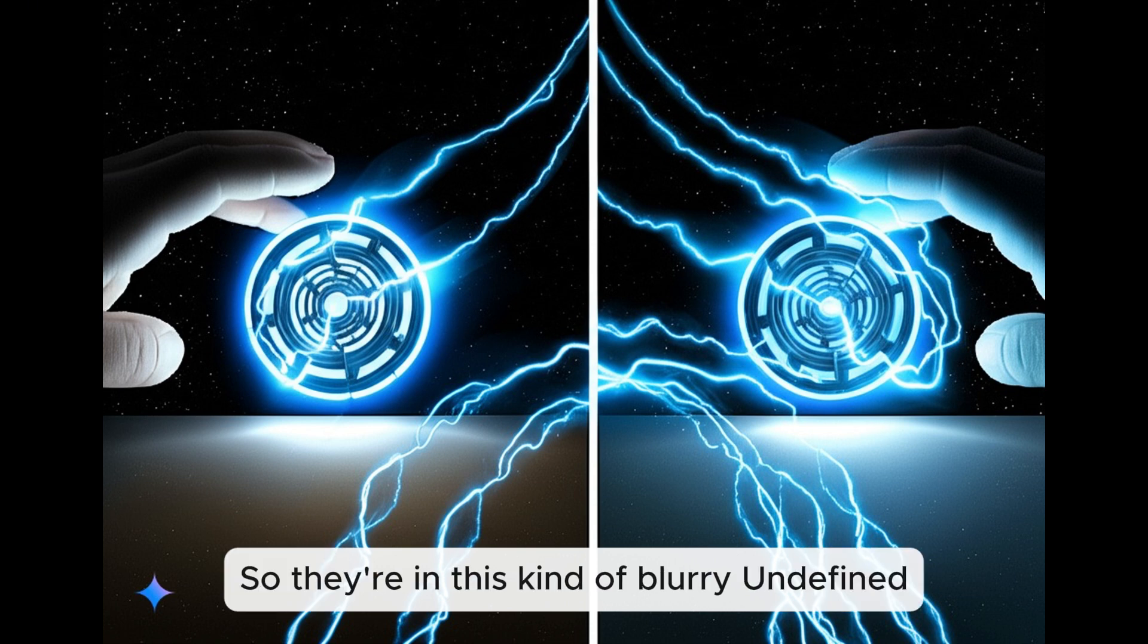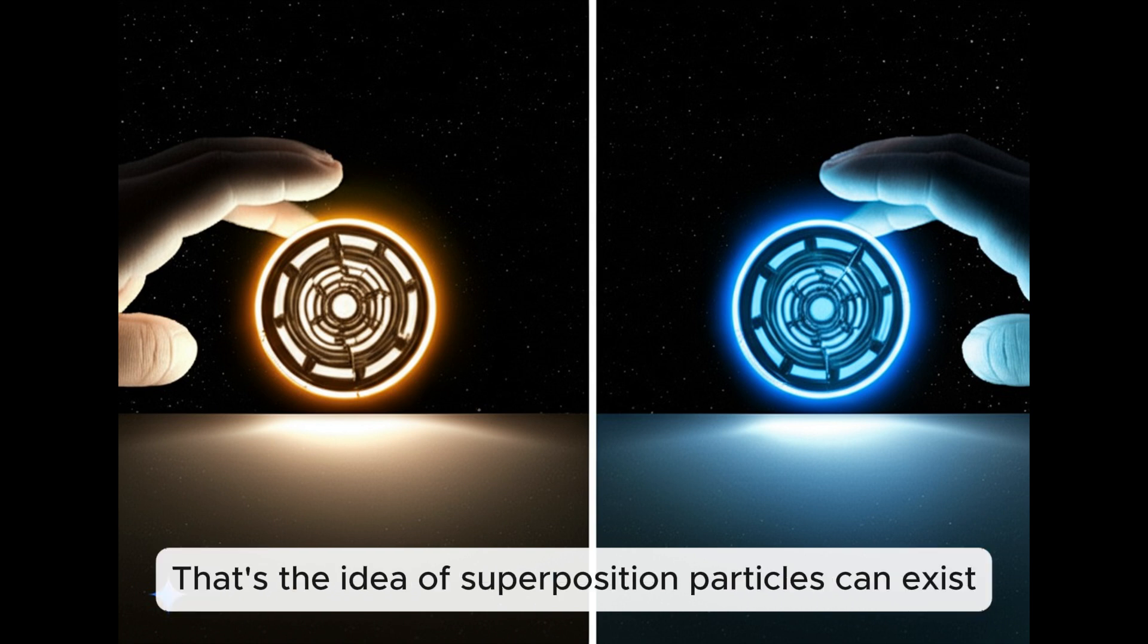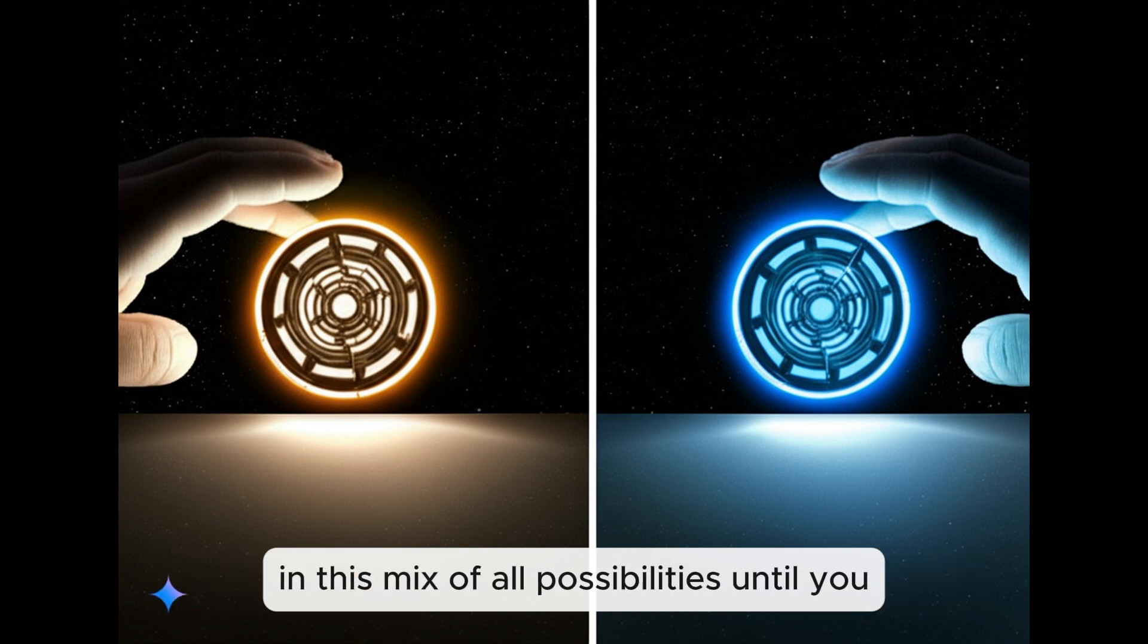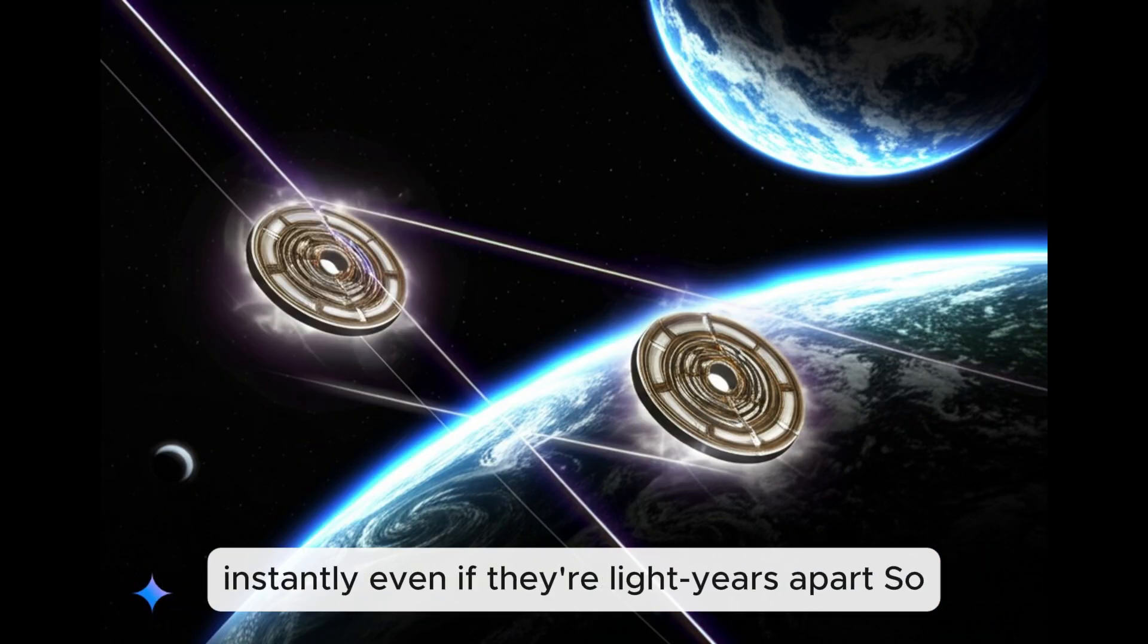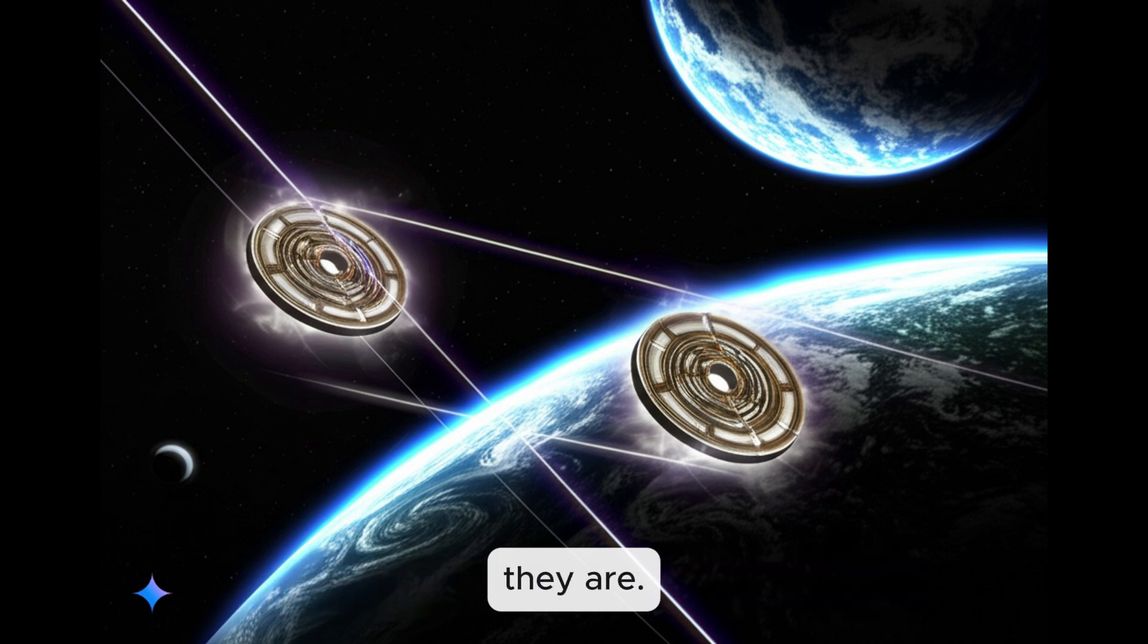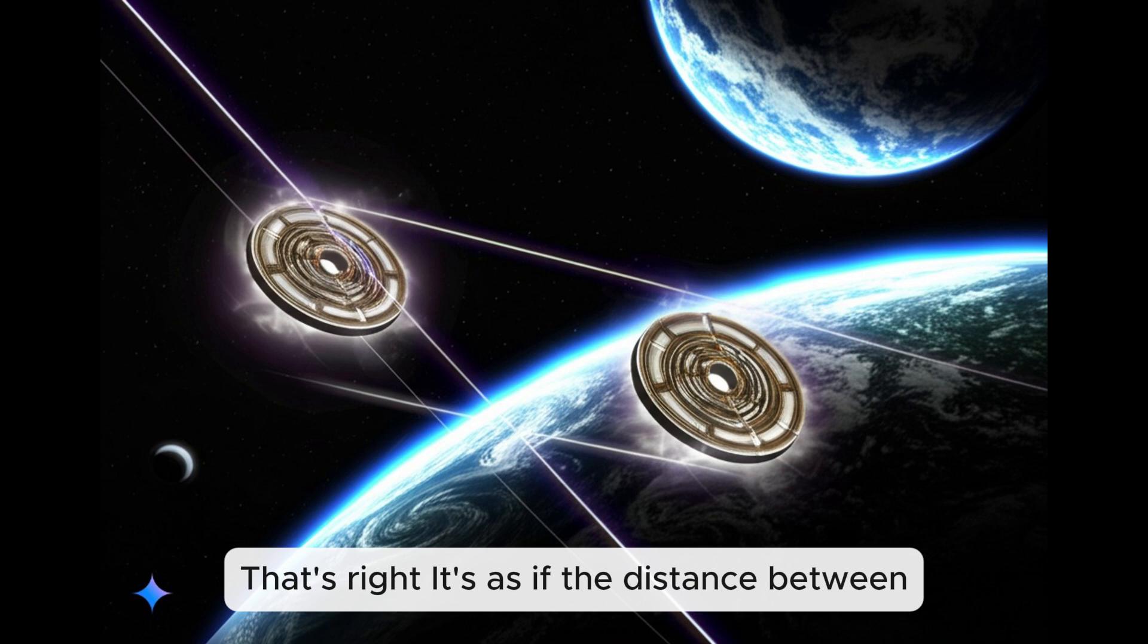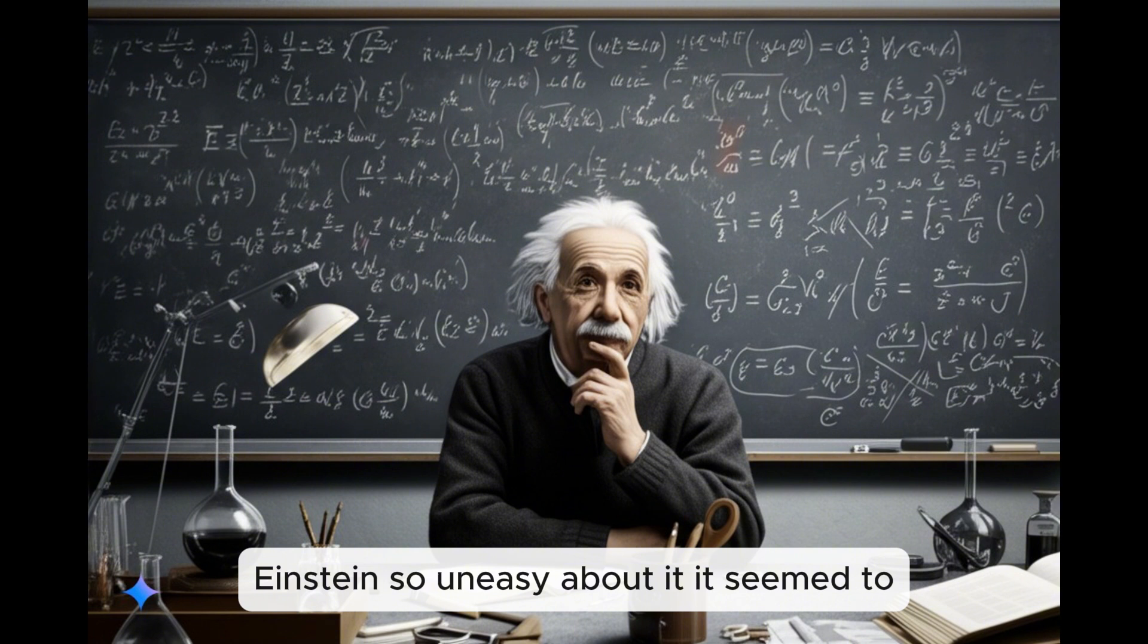It's like they're connected by some invisible thread, but it's even weirder than that, because in the quantum world, it's not just about heads or tails. It's like the coins are both heads and tails at the same time until you look at one of them, and then suddenly both of them decide what they are. So they're in this kind of blurry, undefined state until they're measured. Exactly. That's the idea of superposition.